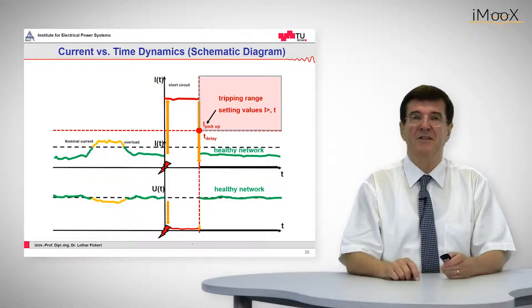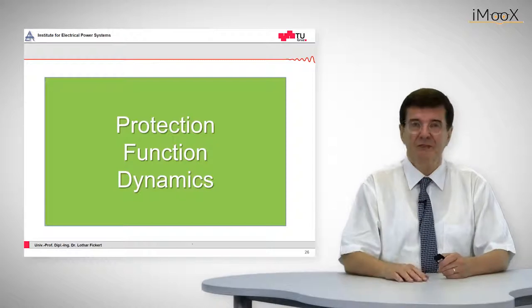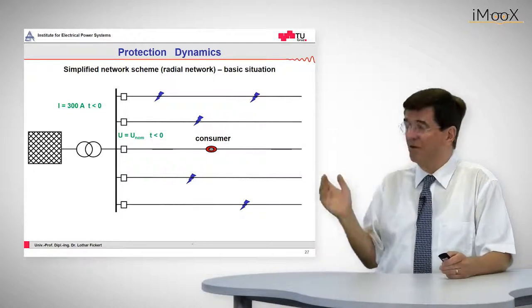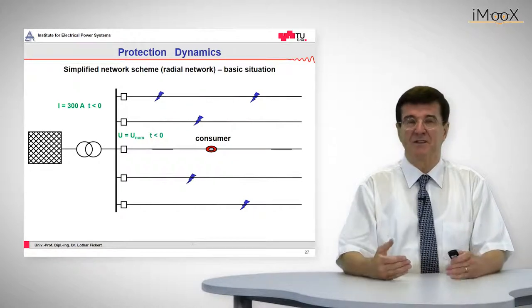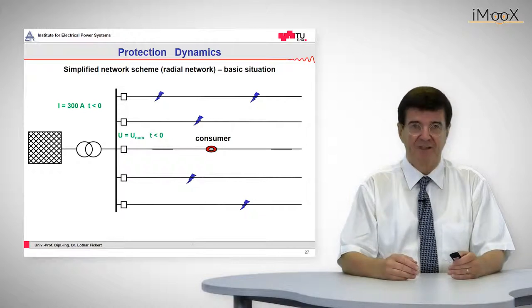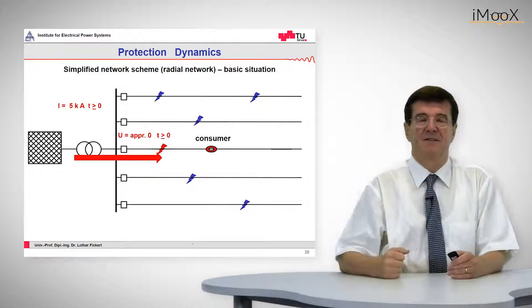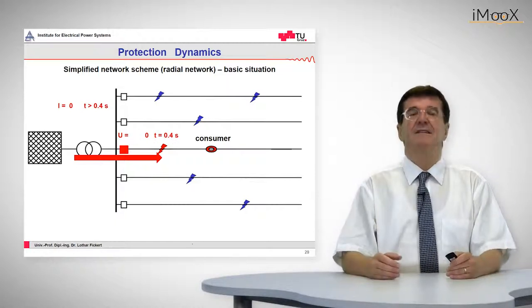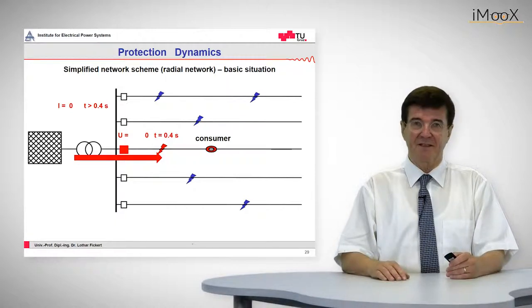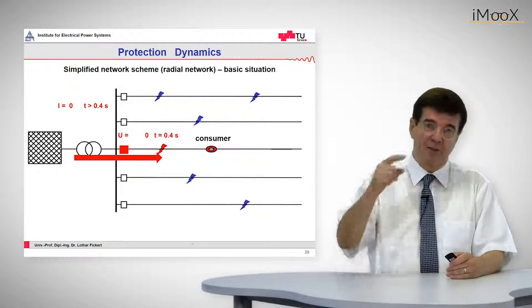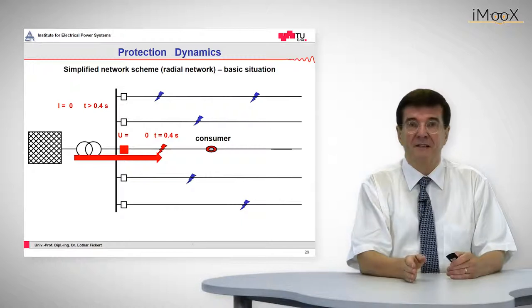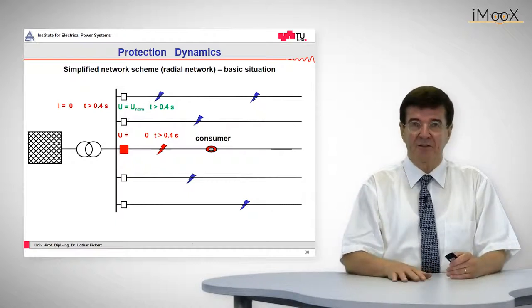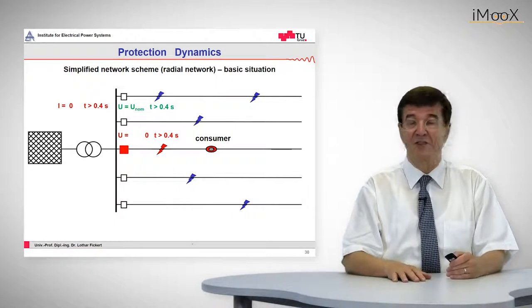So this was the voltage and current dynamics versus time. Now let's see what the protection function does in this situation. Before something happens, the current on this feeder is some 300 amps and the voltage is nominal. When the fault occurs, a big current comes from the source to the fault — these typical 5 kilo-amps. The voltage breaks down and the time starts to run until it has elapsed, at which point the protection operates the circuit breaker. The circuit breaker trips the current path, the feeder is switched off, and the remaining network is healthy again with the voltage recovered.